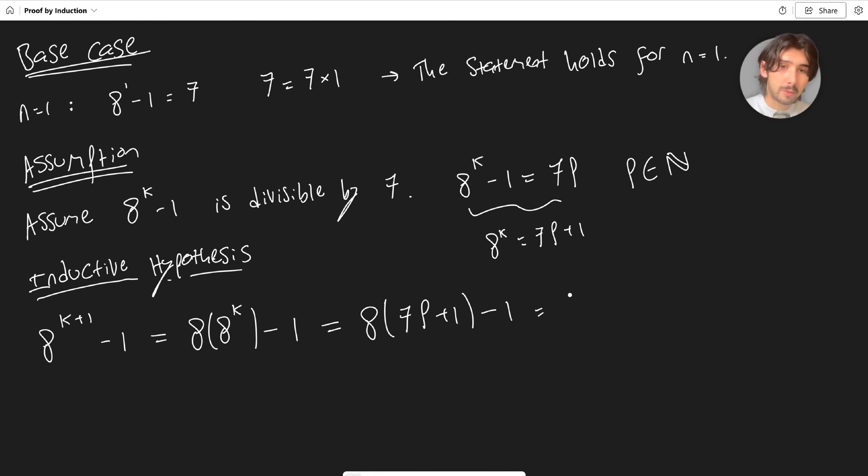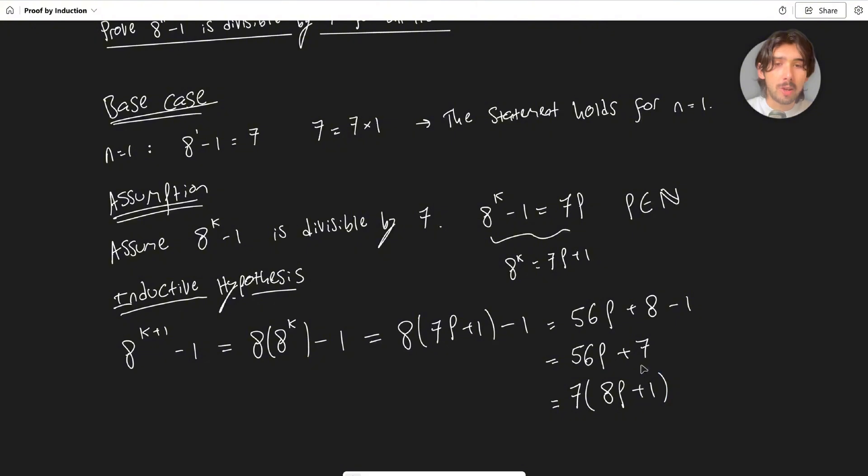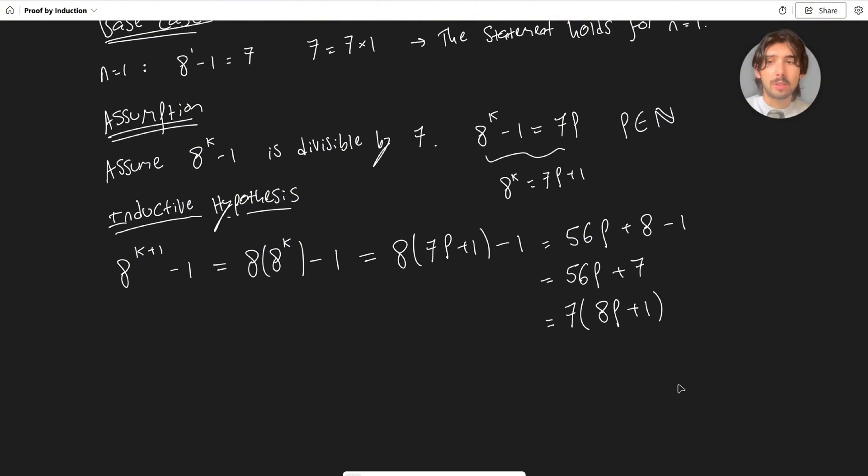We can just expand it back out. 8 times 7 is 56, so I've got 56p plus 8, then minus 1. That's 56p plus 7. Then, because I'm trying to show that it's divisible by 7, I'm going to factor a 7 out of both terms. So 7 times (8p plus 1). What I've just shown, and we know that p is a natural number, is that if the assumption is true, then the next natural number after k, it will also hold for it.